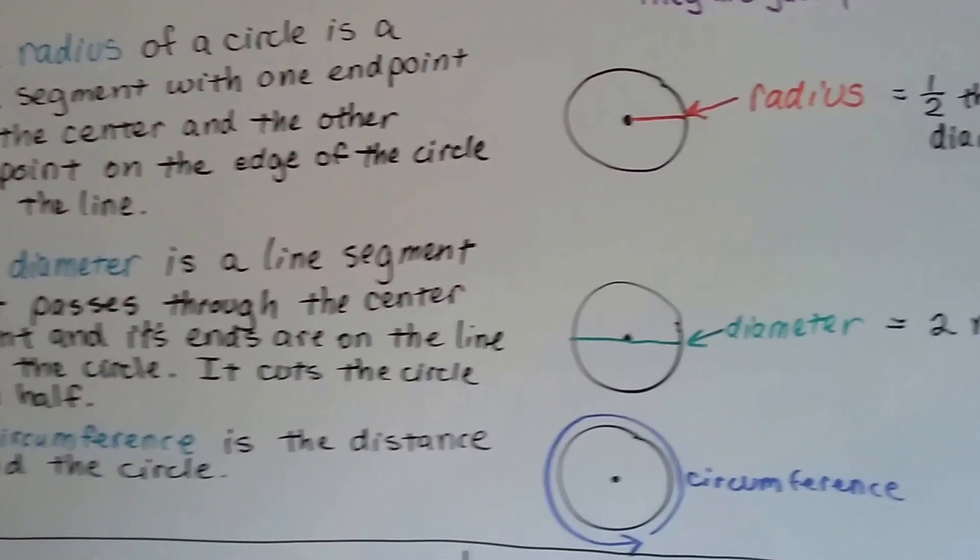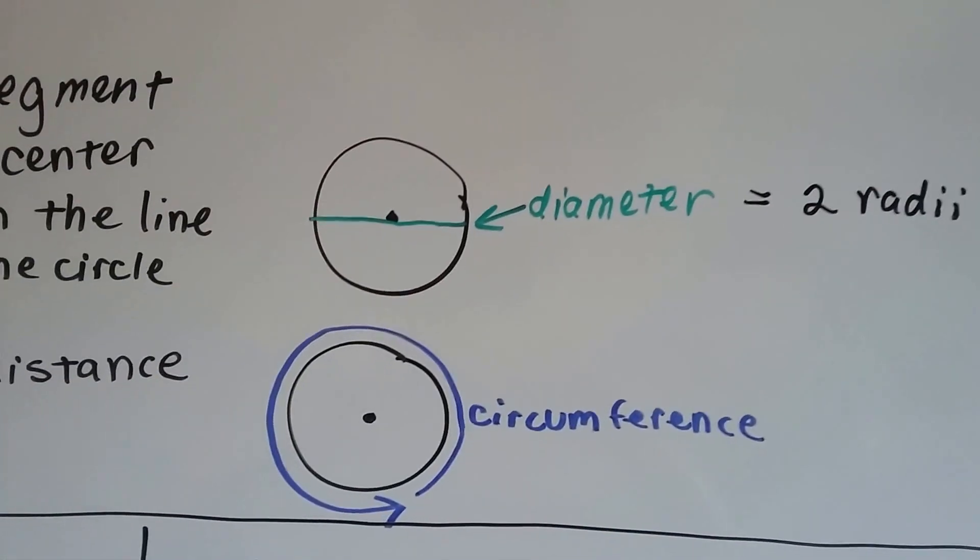And do you remember the circumference is the distance around the circle, like this blue line going around the outside of the circle?